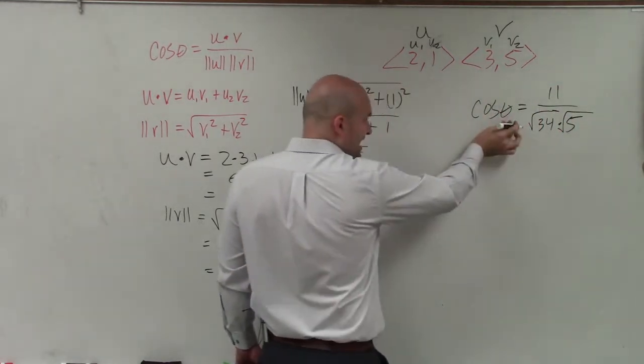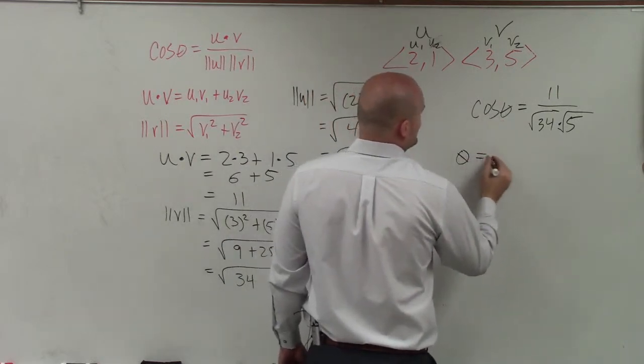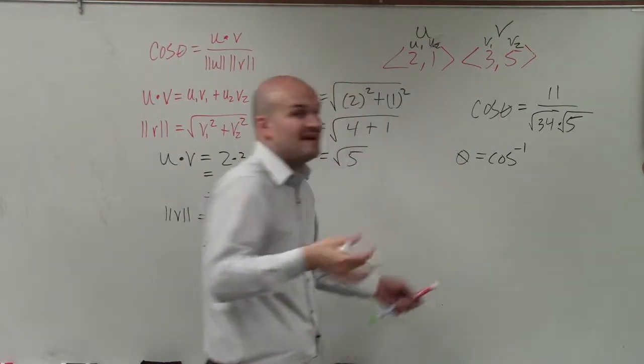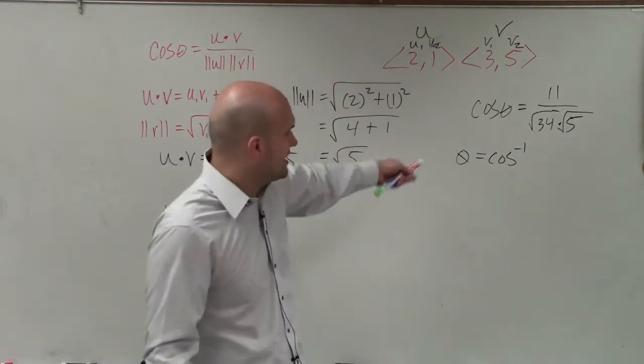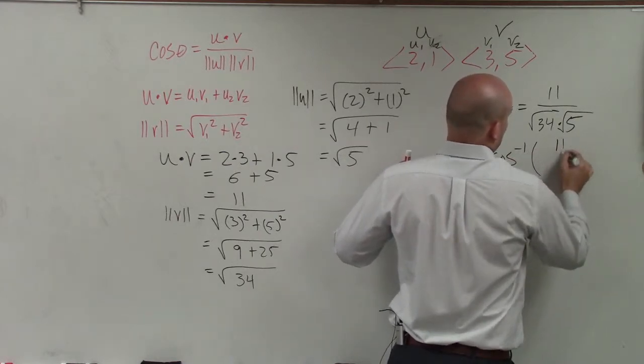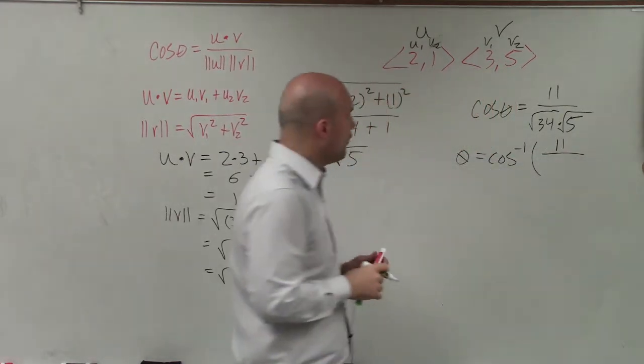Now to solve for theta, I need to use the cosine inverse. So it's going to be cosine inverse, because they're asking us to find the angle between the two vectors. And that's going to equal cosine inverse of 11 divided by...